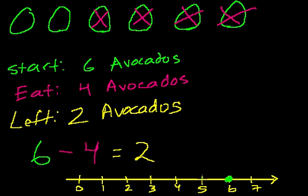Right? If I ate one avocado, I would have five left. If I ate two avocados, I would have four left, right? So the number of avocados that I eat is the number that I take a jump to the left.